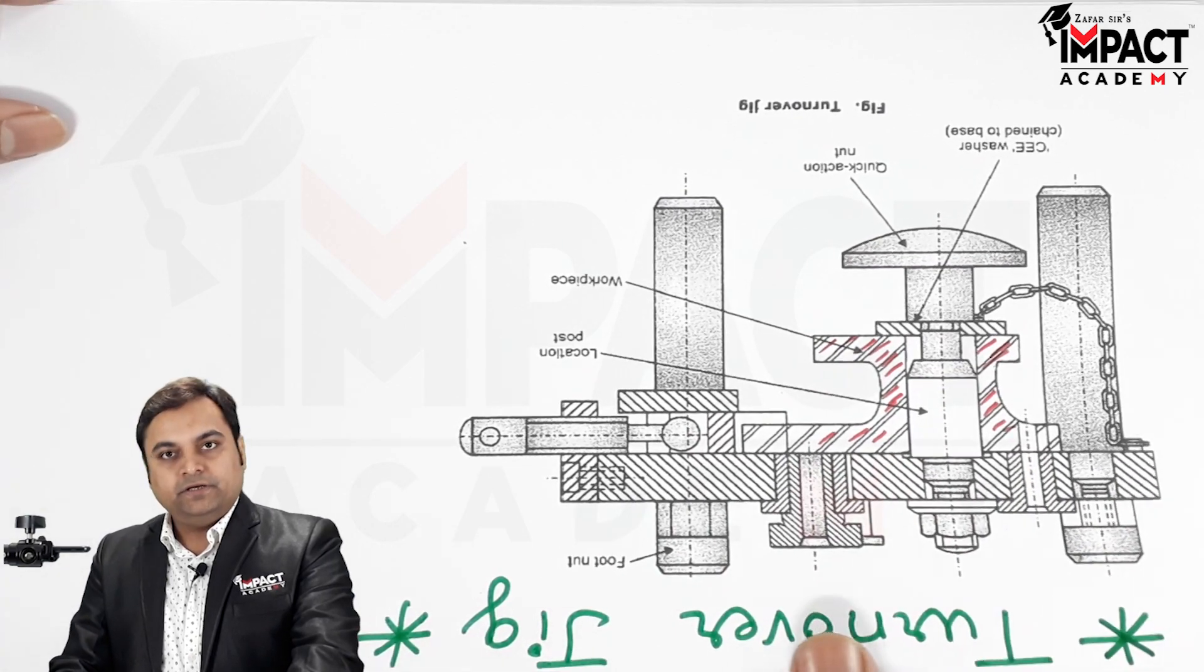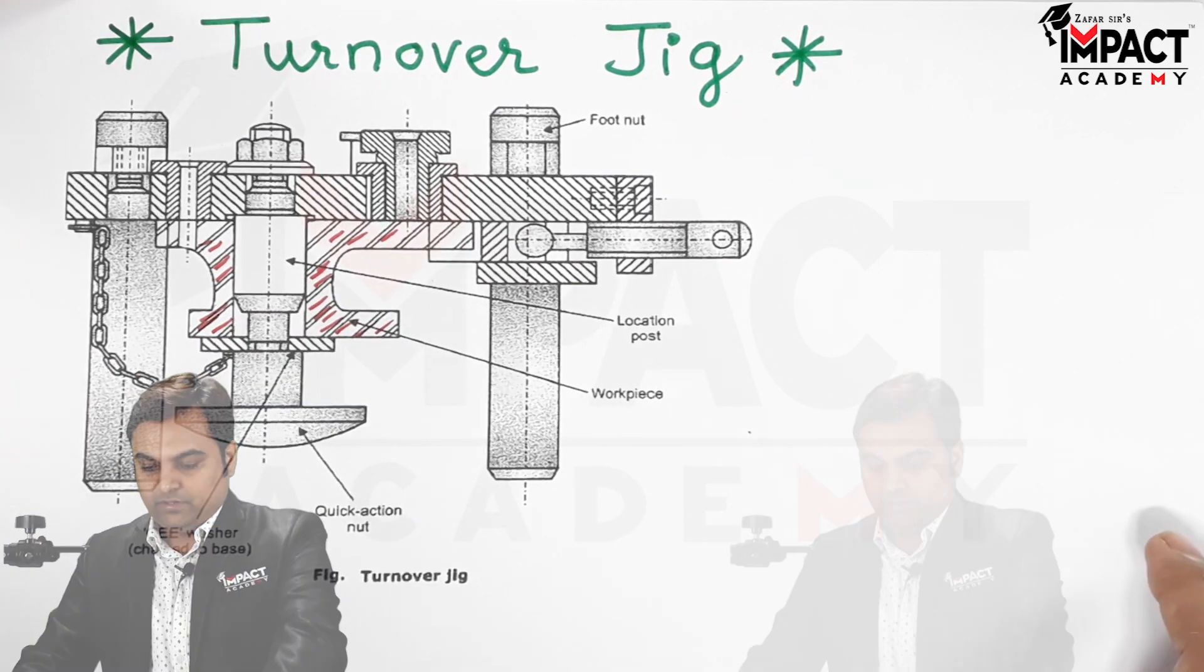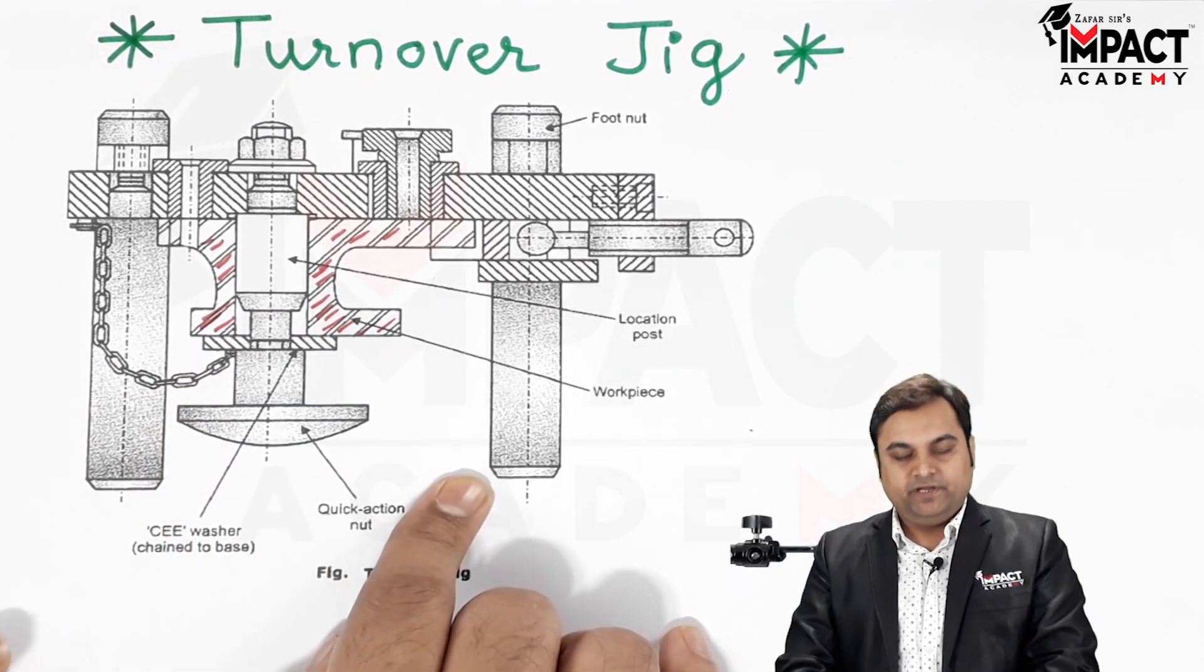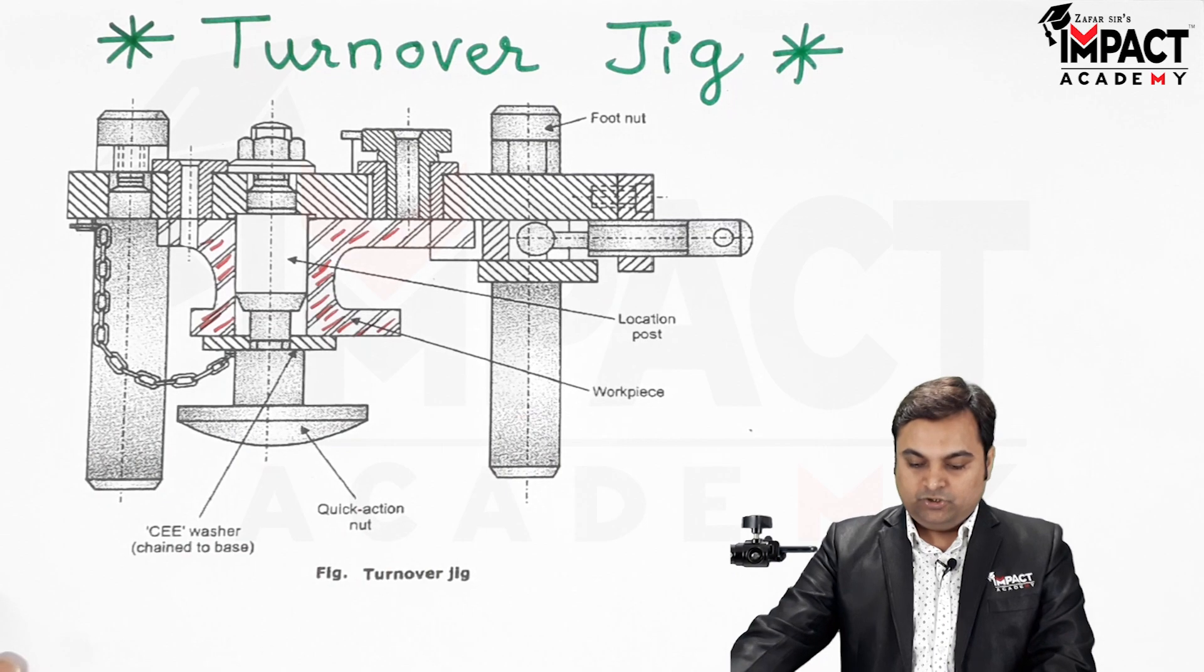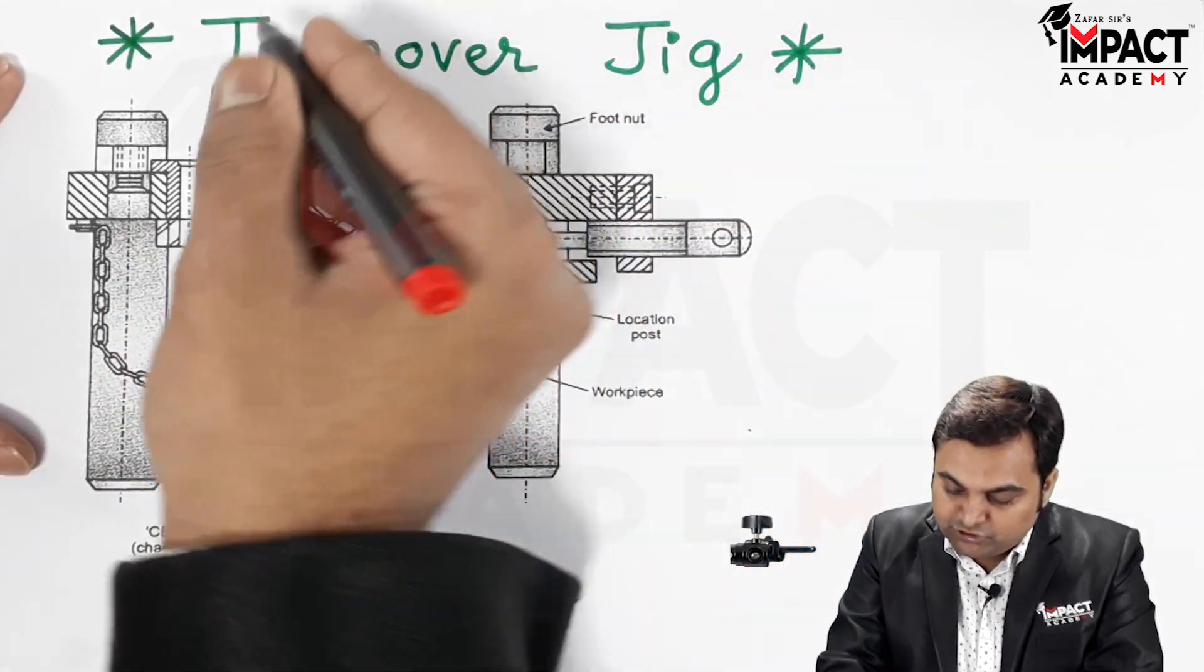It is called the turnover jig because once we have clamped the workpiece by using the quick action nut, this entire jig would be turned over. It would be kept in this way during the machining process. Here we have these drill bushes, as we see here these are the drill bushes.